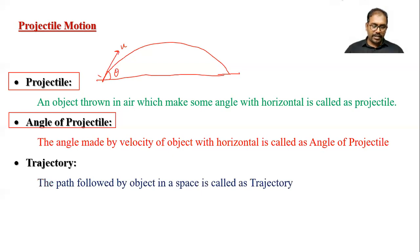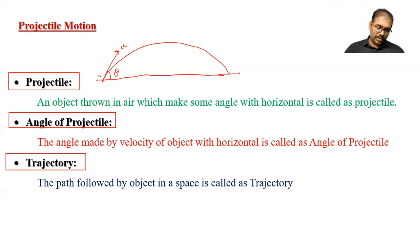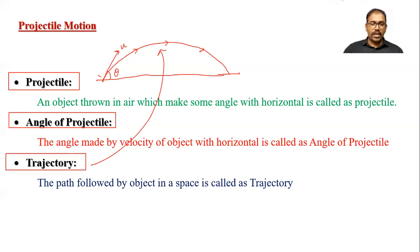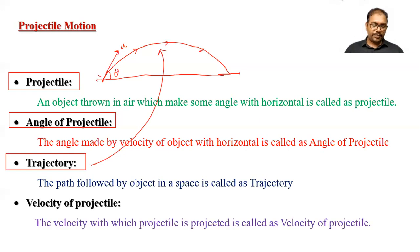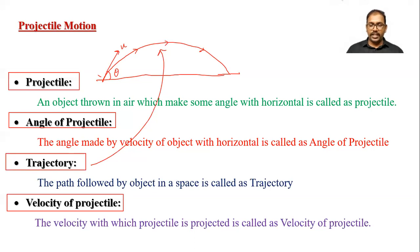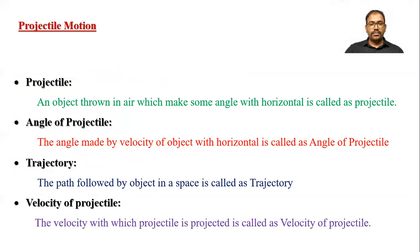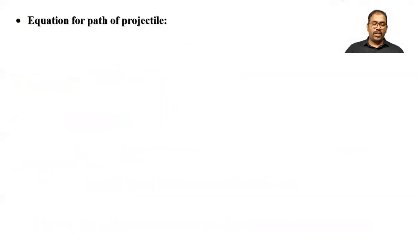Now, what is trajectory? Trajectory means the path followed by the object in space. You can see the object moves like this — this path is called the trajectory. After that, the velocity with which the projectile is projected is called the velocity of projectile.